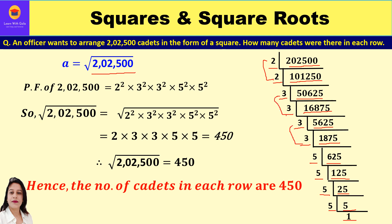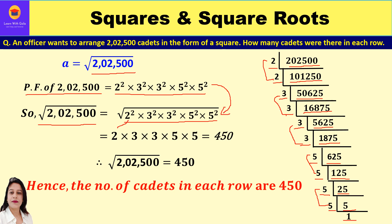Yes, we can form pairs. The prime factors of 22,500 are 2² × 3² × 3² × 5² × 5². So √22,500 = √(2² × 3² × 3² × 5² × 5²). Taking one factor from each pair and finding their product: 2 × 3 × 3 × 5 × 5 = 450. Therefore √22,500 = 450.